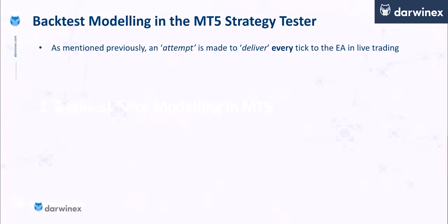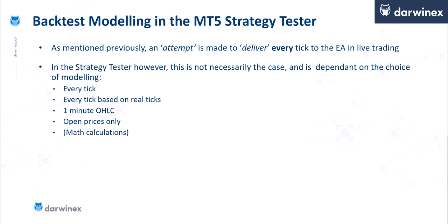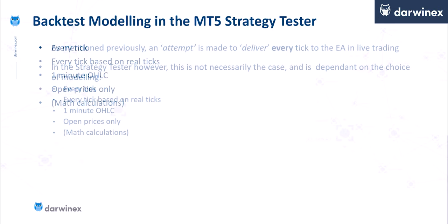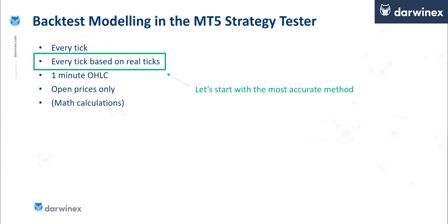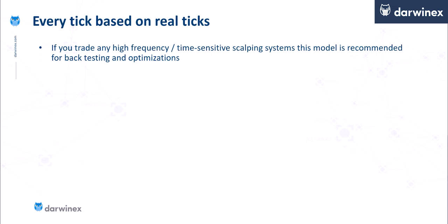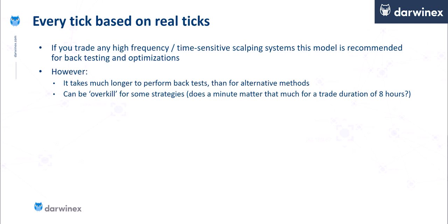The backtest price models that can be chosen within the MT5 strategy tester are: every tick, every tick based on real ticks, one minute OHLC, and open prices only. We're going to start by looking at the most accurate modelling, which is every tick based on real ticks. If you trade any high frequency or time or price sensitive scalping systems, this model is recommended for backtesting and optimisations. However, it takes much longer to perform backtests than alternative methods, and it can be overkill for many strategies — you have to ask yourself, does one minute matter that much for a trade duration of eight hours?